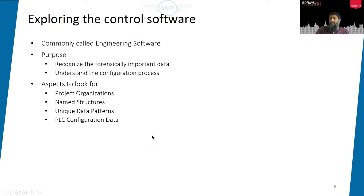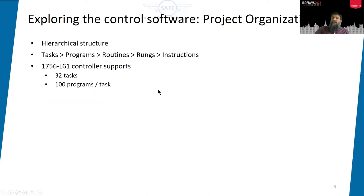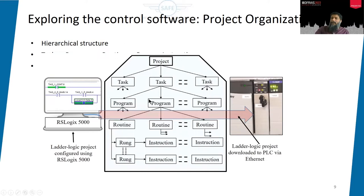In Allen Bradley, the project is organized in the form of tasks — there are up to 32 tasks in one project. Each task has up to 100 programs, each program has multiple routines, each routine has rungs, and each rung has instructions — a five-layer hierarchy. We can name the routines, programs, and tasks. We create a program in RSLogix 5000, the engineering software or control software for this particular PLC, and push it to the PLC.